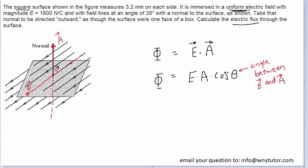We know this angle right here is 35 degrees. We're seeking that angle, because that's the angle between electric field and the area vector.